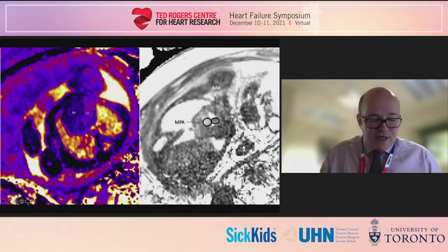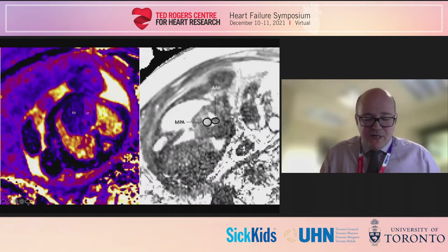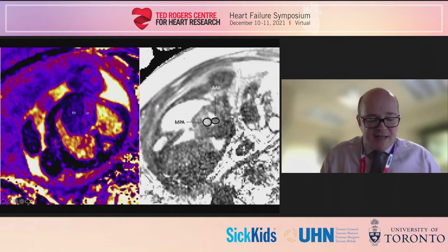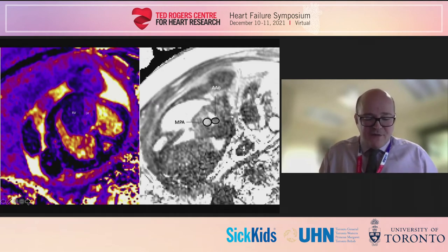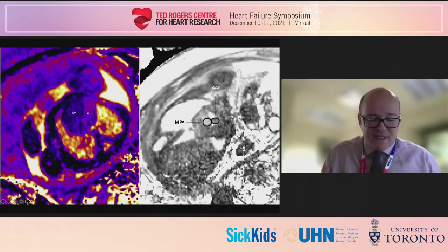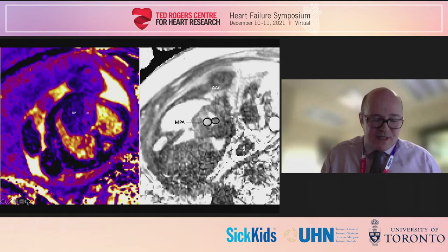By contrast, in this fetus with transposition, the four-chamber view on the left confirms that streaming has resulted in higher oxygen saturations in the left ventricle than the right. However, as the coronal image on the right confirms, in transposition this means that it is the lungs and lower body that receive this well-oxygenated blood, while the aorta and cerebral circulation are supplied by more deoxygenated blood from the right ventricle.